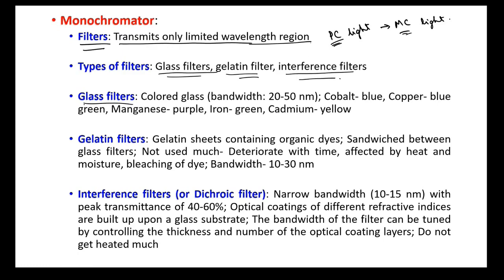Glass filters are easy to prepare. When preparing glass, metal ions with their own color are added, imparting color to the glass. These colored glasses have a bandwidth of 20 to 50 nanometers. For example, cobalt gives a blue color glass, copper gives blue-green, manganese gives purple, iron gives green, and cadmium gives yellow color glass.